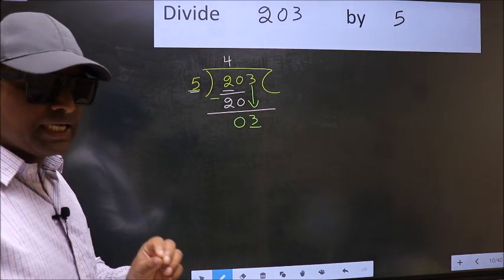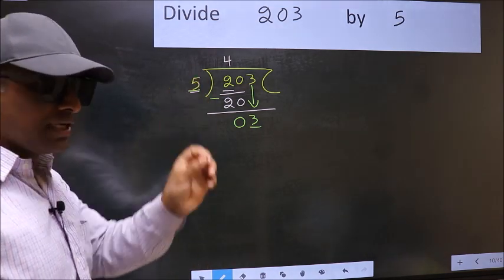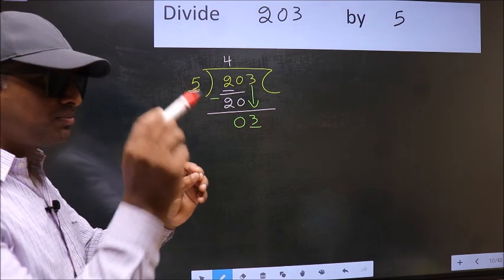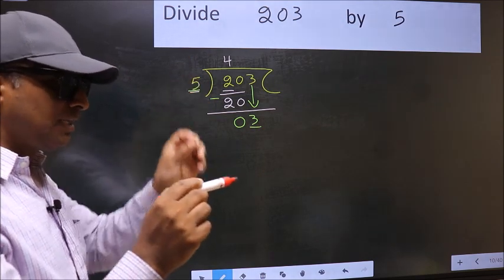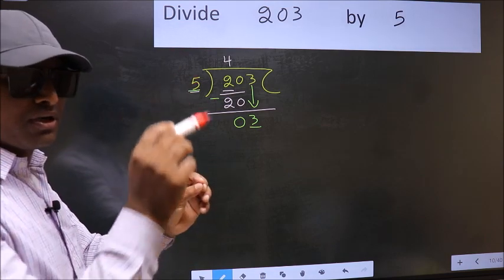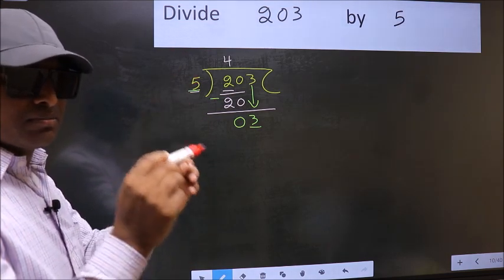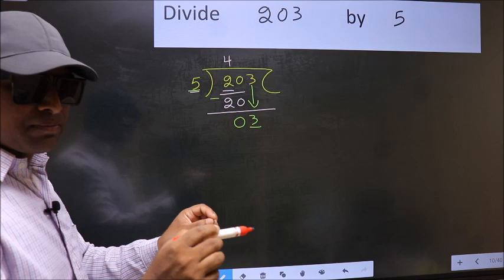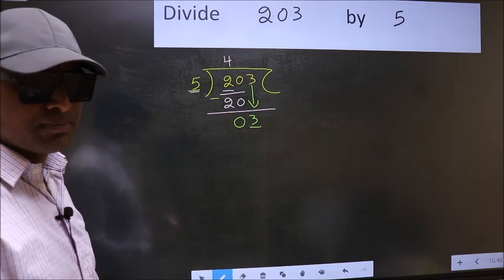I repeat: bringing the number down and also putting a dot and taking 0, both in the same step, you are not supposed to do.